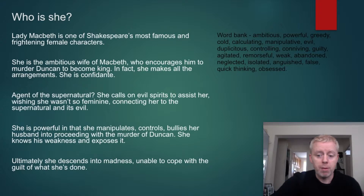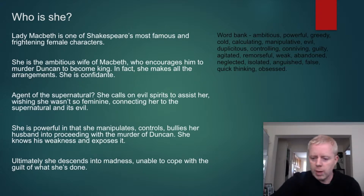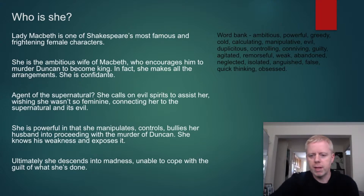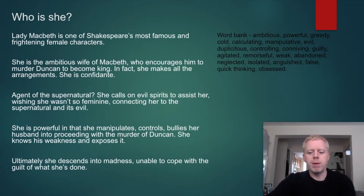So how powerful must she be if she controls and bullies and manipulates him? She knows his weaknesses and exposes them. Ultimately she descends into madness, unable to cope with the guilt of what she's done, the role she's played in the murder of Duncan, and the growing distance in her relationship with Macbeth, which was once very close.